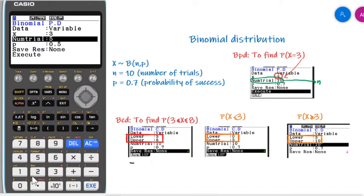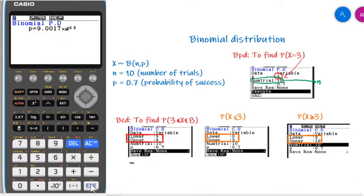This is N, the number of trials, and this is P, the probability of success. This is the answer for this example.